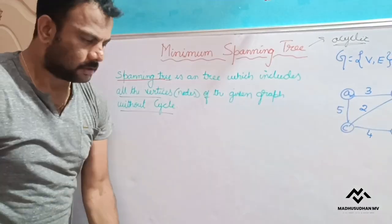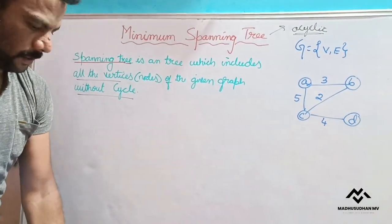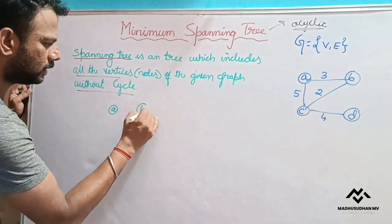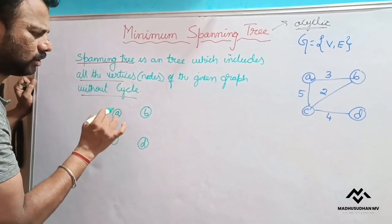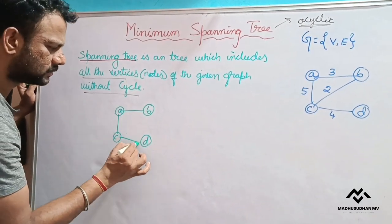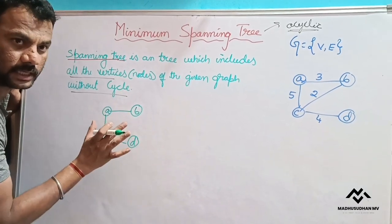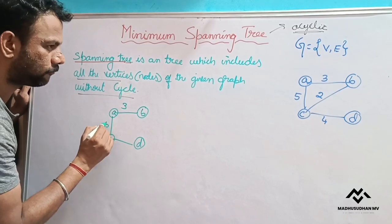So let us construct spanning tree for this graph. So we know that for this all the vertices we need to include. So a, b, c, d, all the vertices. Now include, so this is one possible. See I included all the vertices, all are connected, there is no cycle, this is one spanning tree. So this weight is 3, 5, 4.